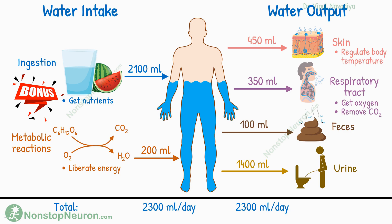Thus, the primary purpose of most of these activities is different, and they are regulated according to the needs of those activities. For example, increase or decrease in respiration occurs to maintain optimal levels of oxygen and carbon dioxide, not water. Only the kidneys are primarily concerned with keeping the water level constant. Drinking water is also primarily concerned with water balance, but it cannot be regulated as precisely as urine excretion can be. Thus, the kidneys are the most important organ in water balance.